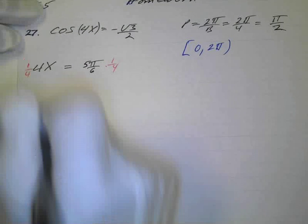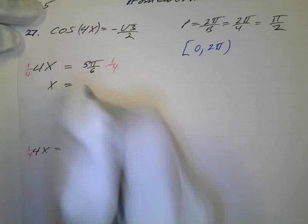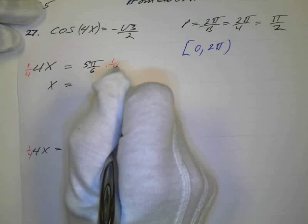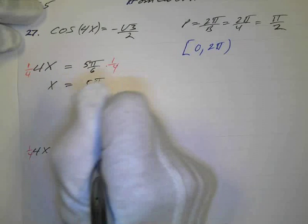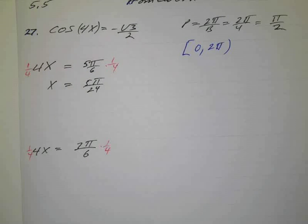And we'll get x equals... And then this is going to be 6 times 4 is 24, so 5π over 24. Okay?